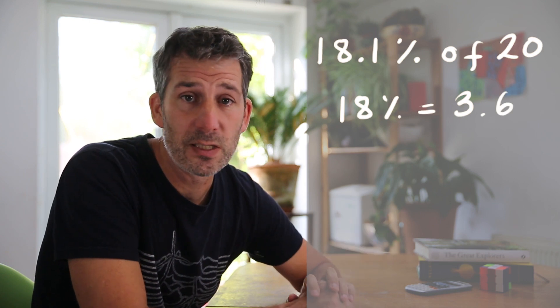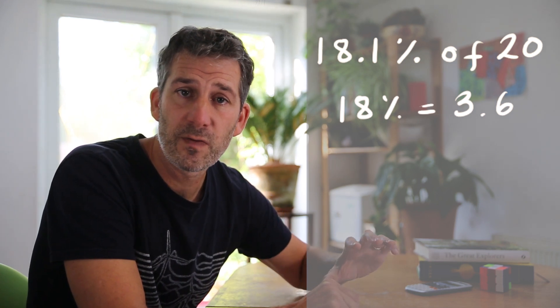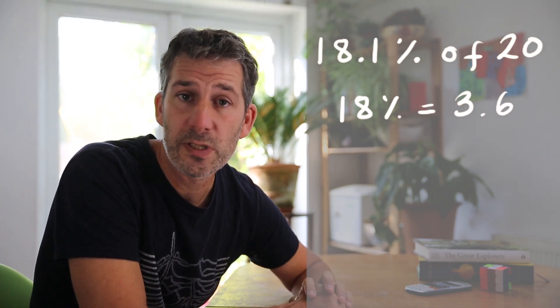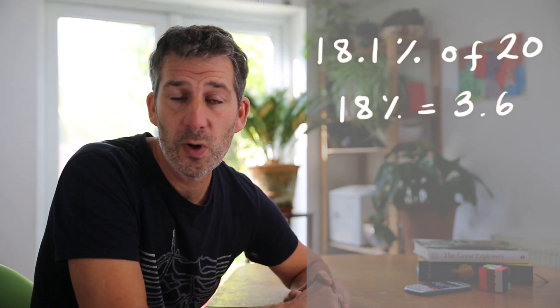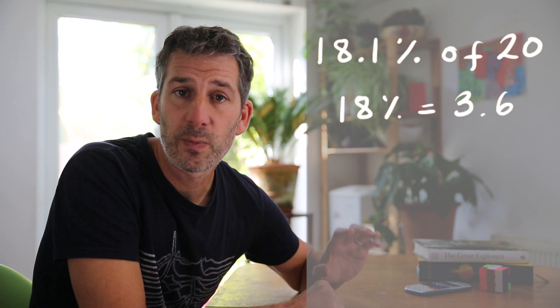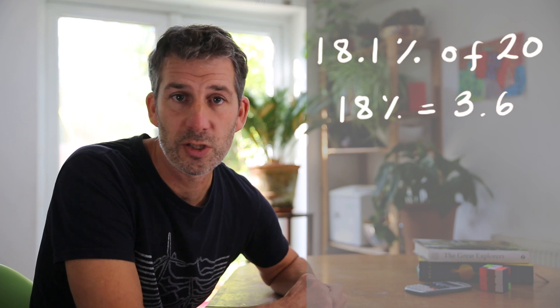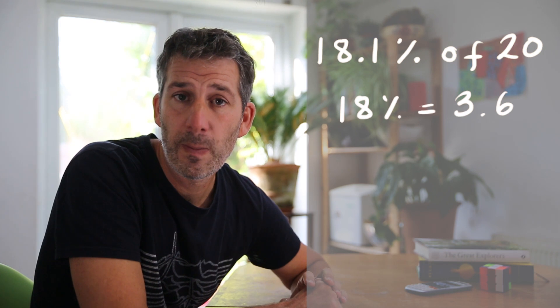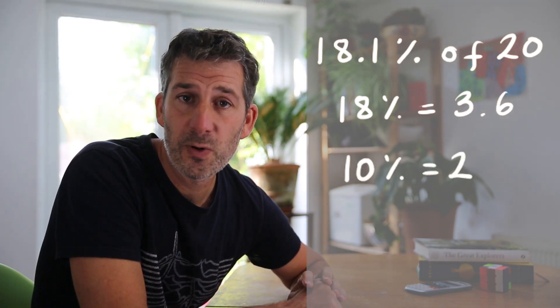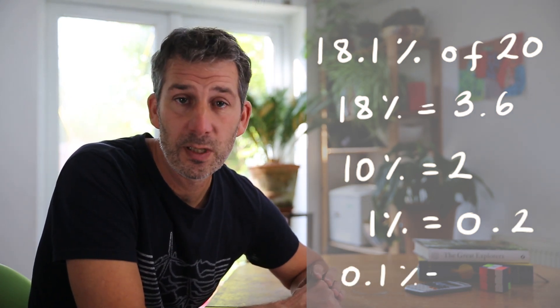So what we've got to do now is find that 0.1%. So we know that to find 10% you divide by 10, and then if you divide that by 10 again, that tells you what 1% is, and if you just divide by 10 again, that will tell you what 0.1% is. So to find 0.1% of something, you divide by 10, divide by 10, divide by 10, in other words you divide it by 1000. So you could just jump straight to that, divide it by 1000. So 10% of 20 is 2, so 1% of 20 is 0.2, so 0.1% of 20 is 0.02.